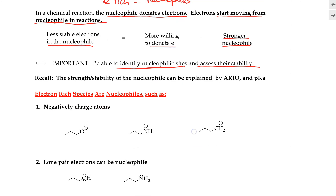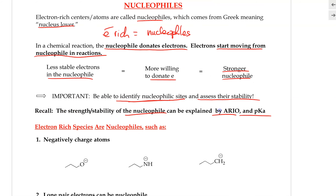The strength or stability of the nucleophile can be determined using aromaticity and also the pKa of the conjugate acid. These are tools we have already learned for determining the stability of a set of electrons, and they translate to knowing how reactive the nucleophile will be.